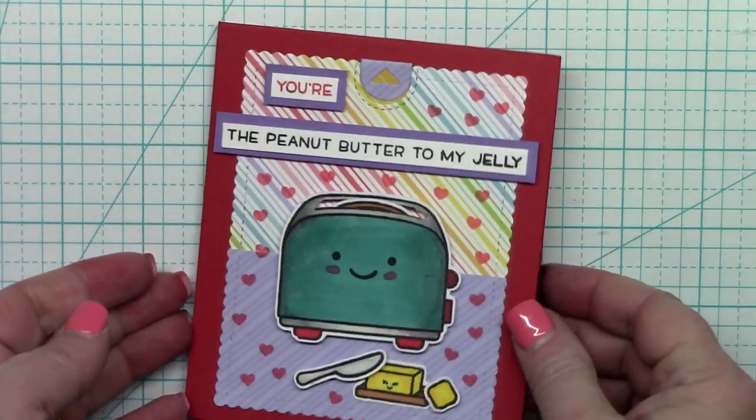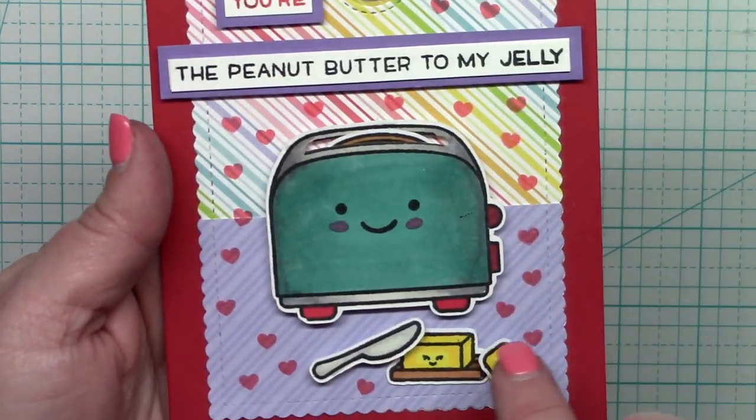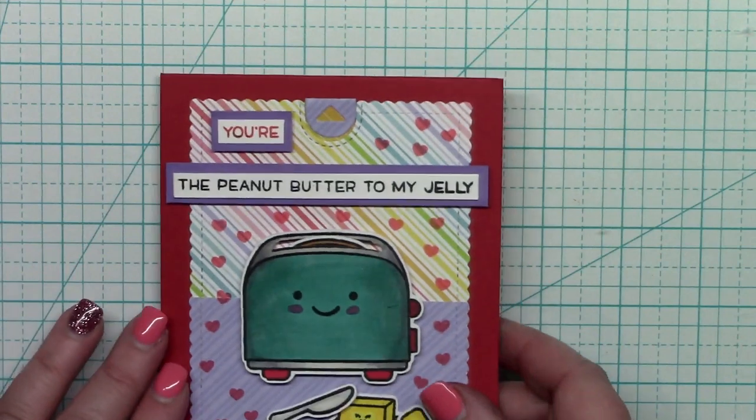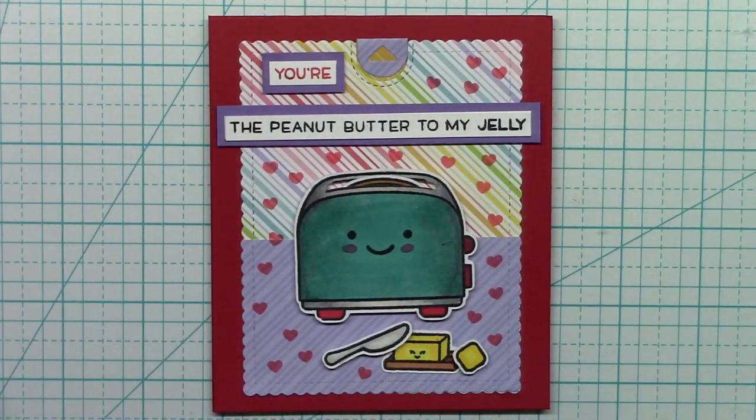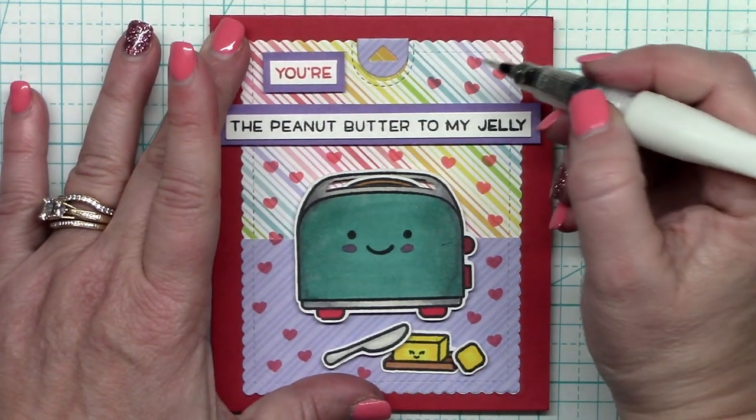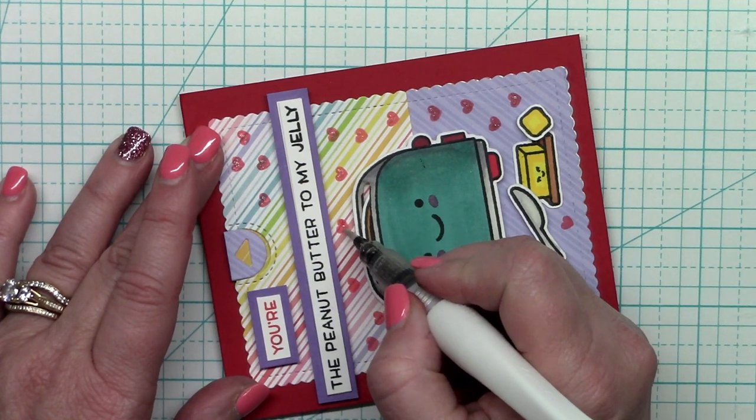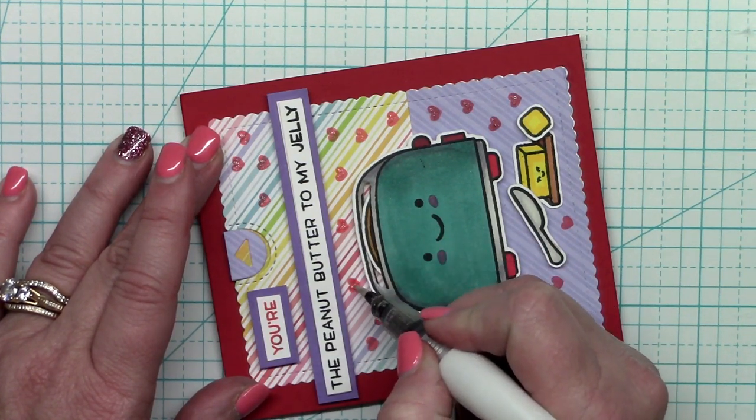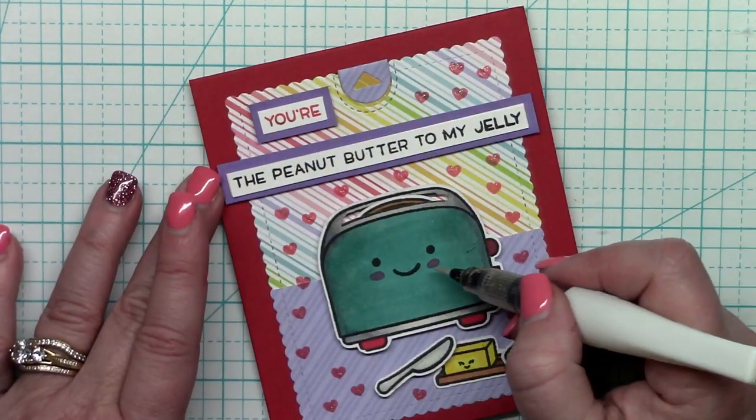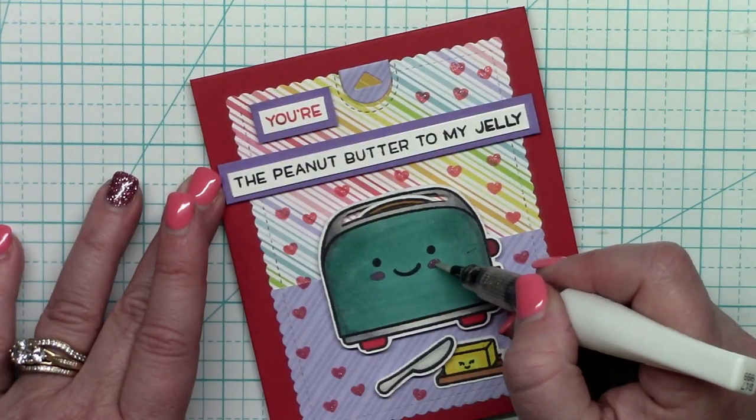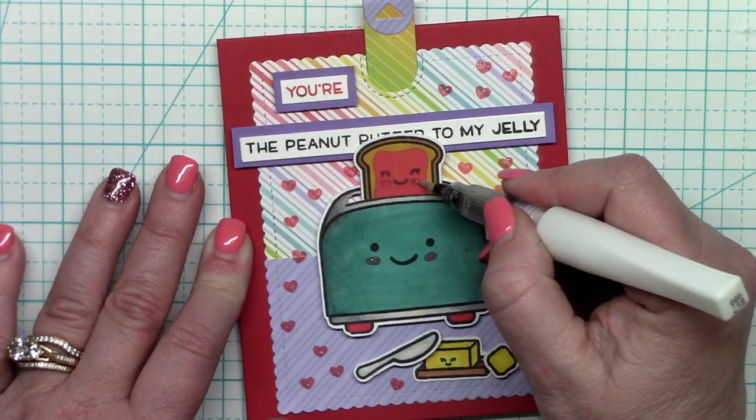Now the set comes with this tiny little heart and so I stamped that all over my card front just to make sure that if you didn't figure it out already this is about Valentine's Day. And I used my Wink of Stella and put a little bit of that Wink of Stella on every single little heart. And that gives it a little bit of glimmer and glam. I also put it on the rosy cheeks of the toaster and also on the peanut butter and jelly toast.